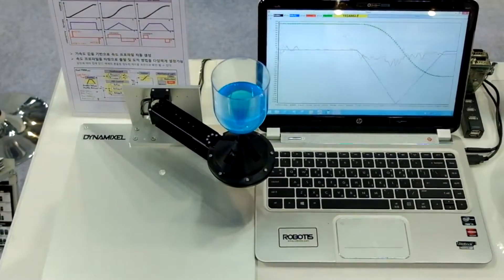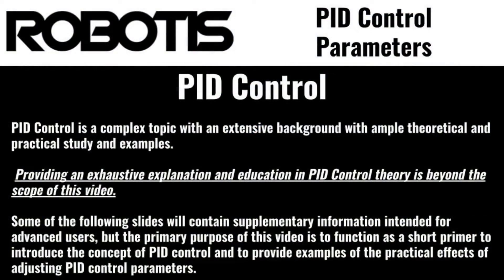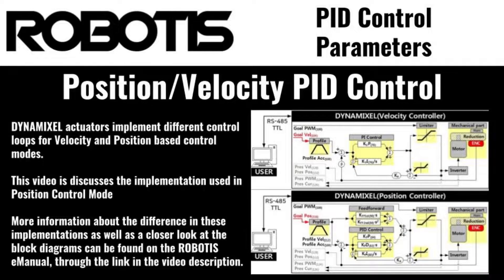This tutorial will explain what motion component each of the three parameters of PID control corresponds to, so that you have an idea of what to adjust to achieve the type of motion you need for your application. Before we get started, I'd like to provide a quick description of each of the parameters used in PID control systems. If you'd like to learn more about a specific parameter, feel free to skip to that section of the video.